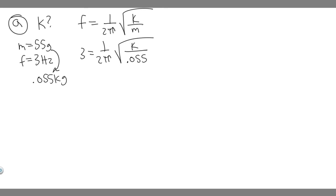The first thing we should do is multiply both sides by 2 pi. That's going to get rid of this. 2 pi times 3 is just 6 pi. 6 pi equals the square root of k over 0.055. Let's square both sides. 6 pi squared is just 36 pi squared.